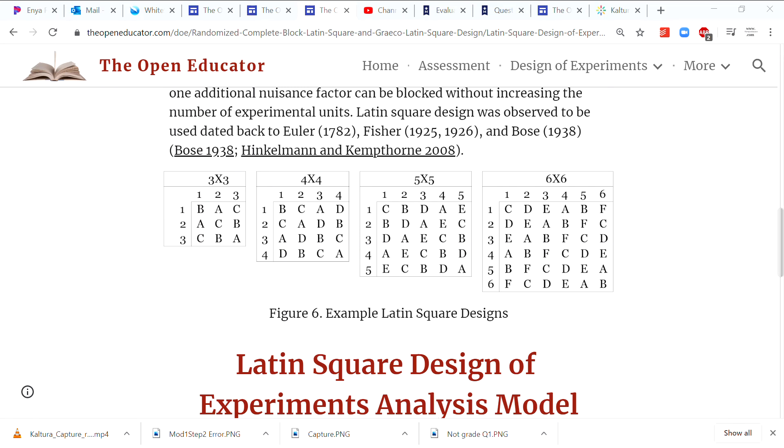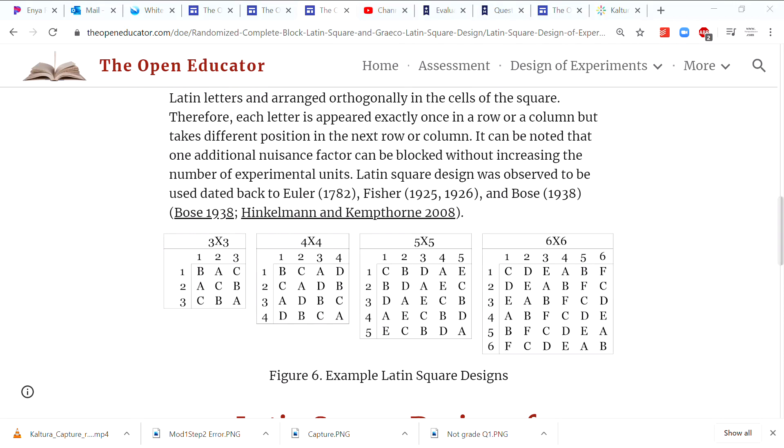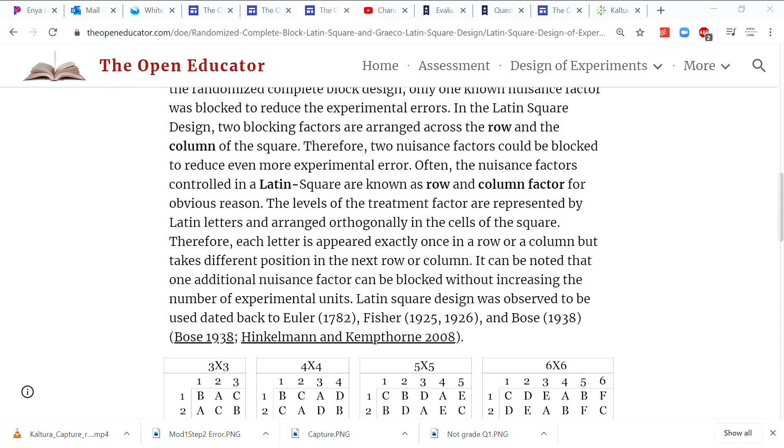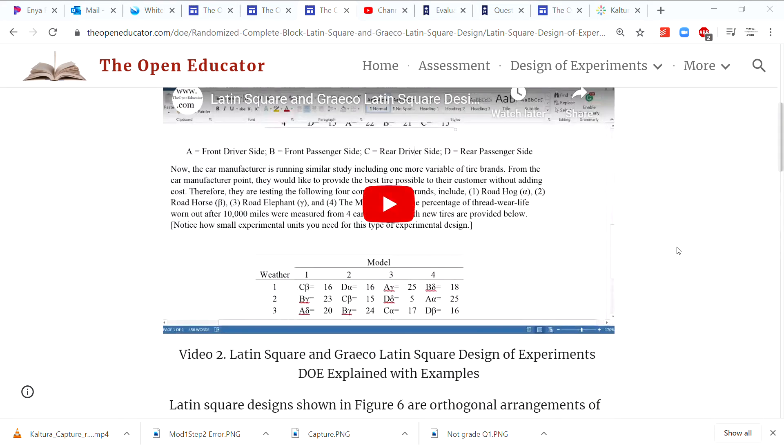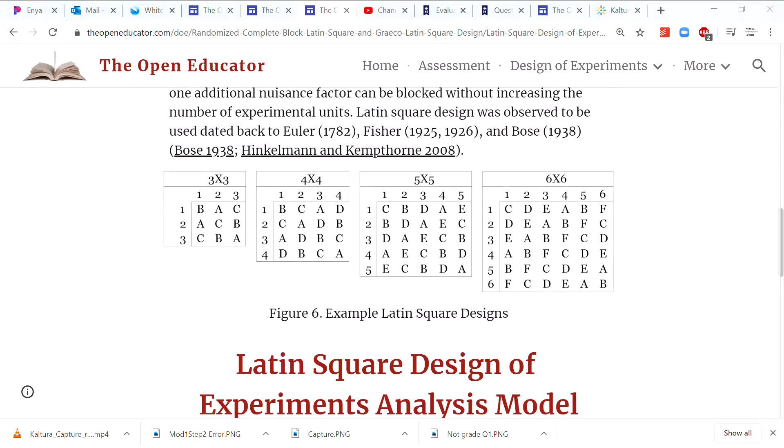This is an orthogonal combination of rows and columns where the Latin letter only appears once in each of these columns or rows. Sometimes it's called row and column design. In the randomized complete block design we have block experimental error in one direction. In Latin square you can block error in two directions, the row direction and also in column directions.